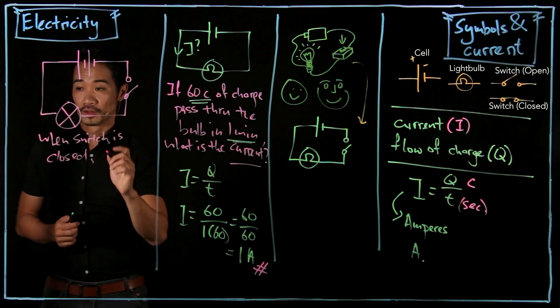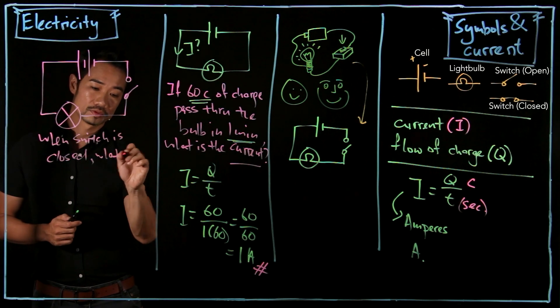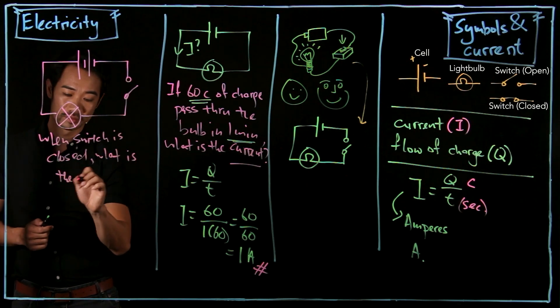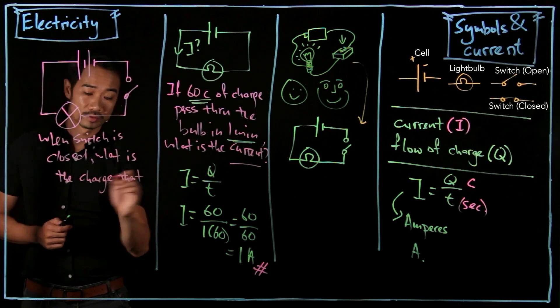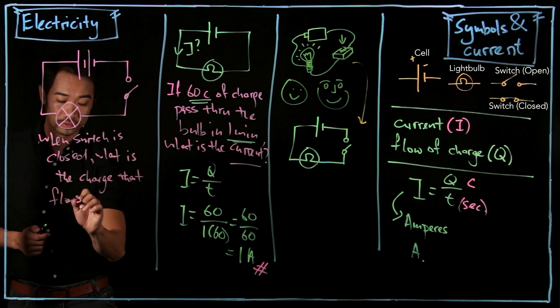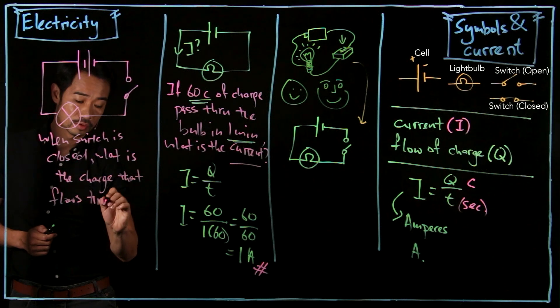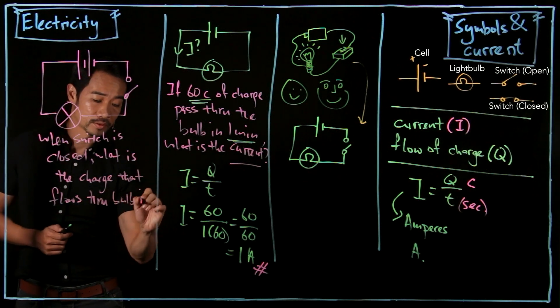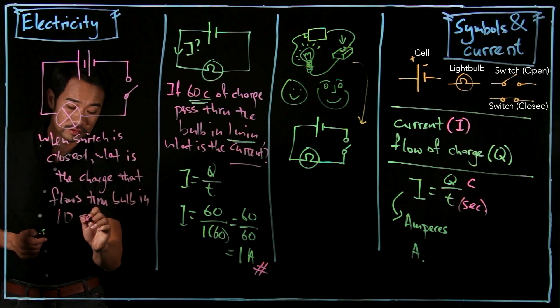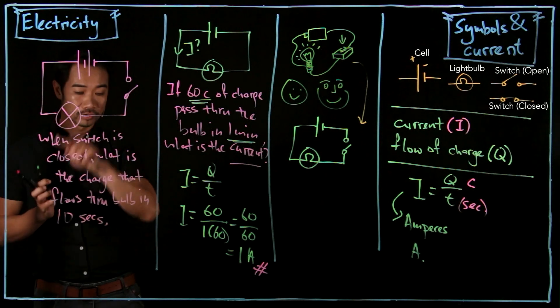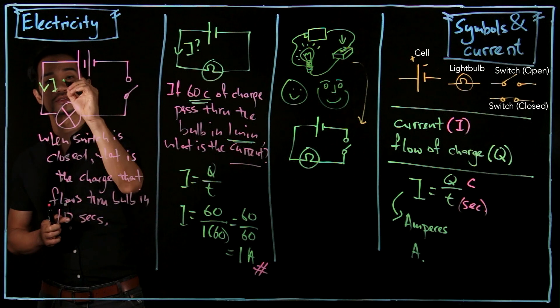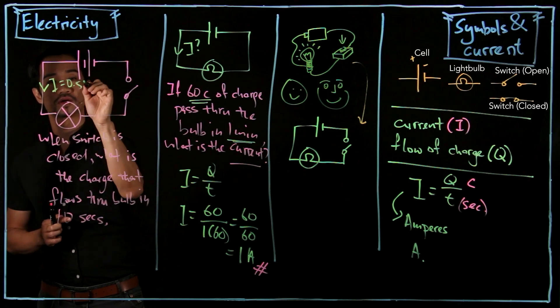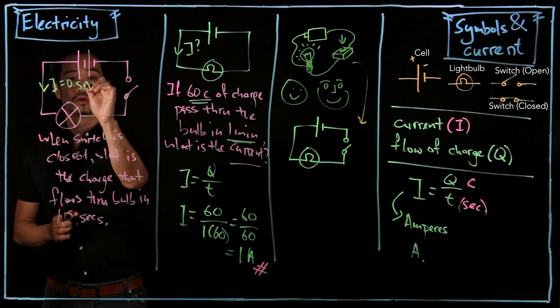What is the charge that flows through the bulb in 10 seconds? So in order to answer this, they need to give you I. So let's say I is equals to 0.5 ampere. So what is the charge? So how do we use this?